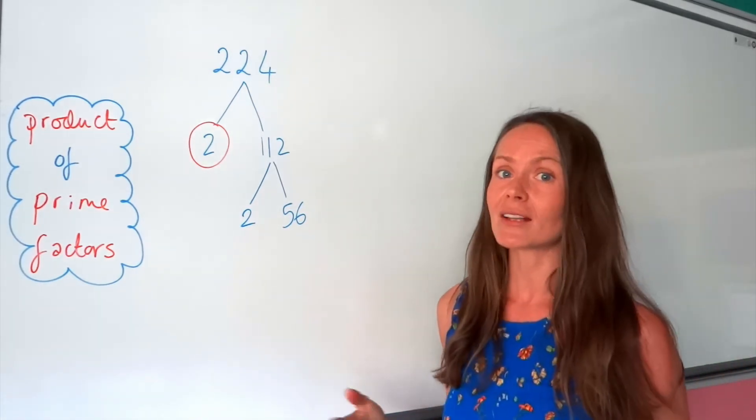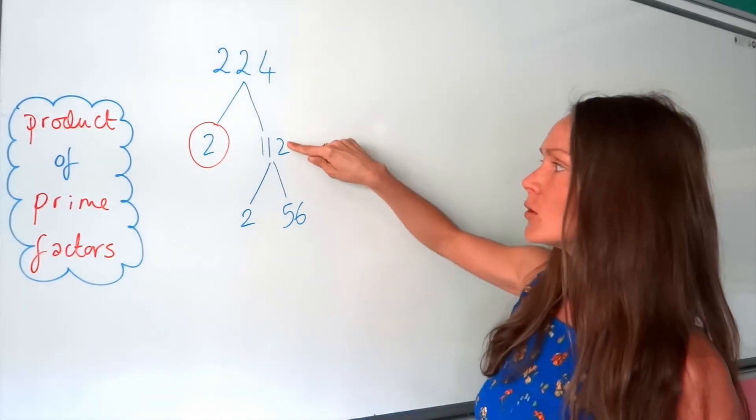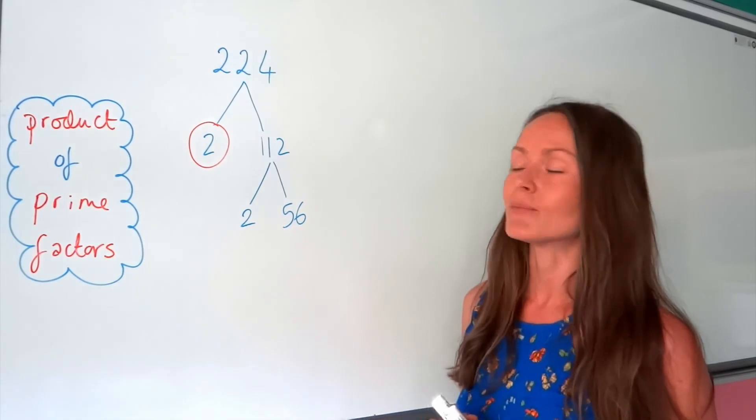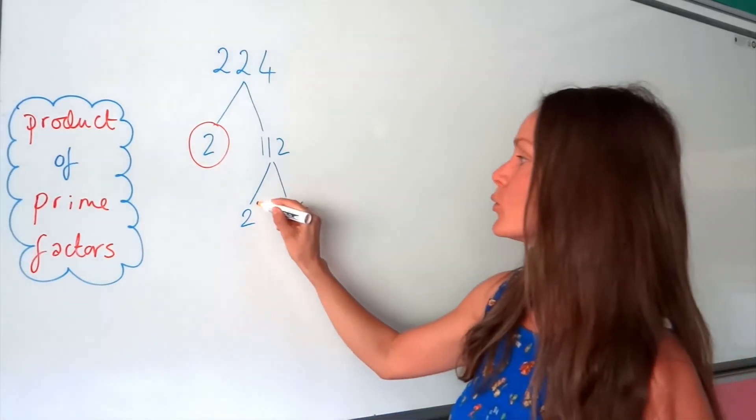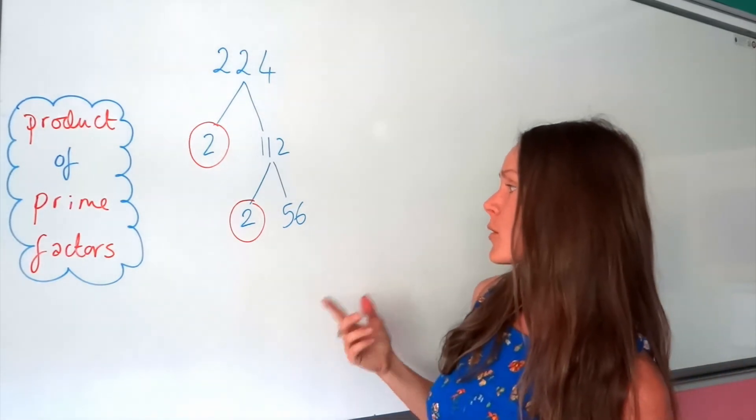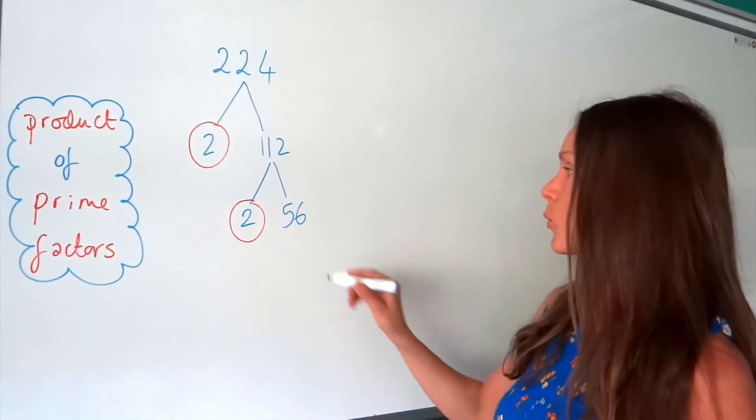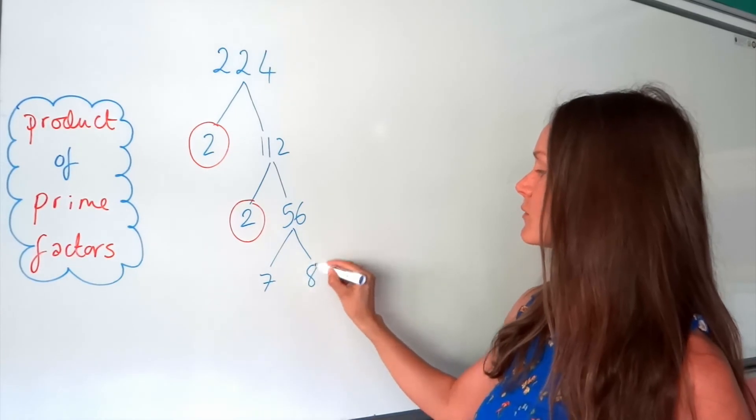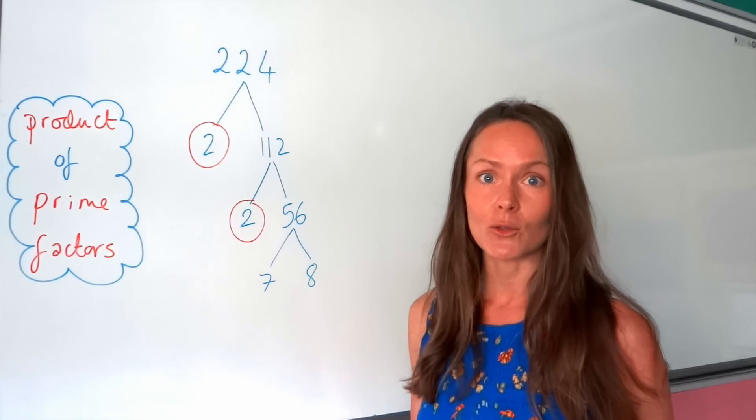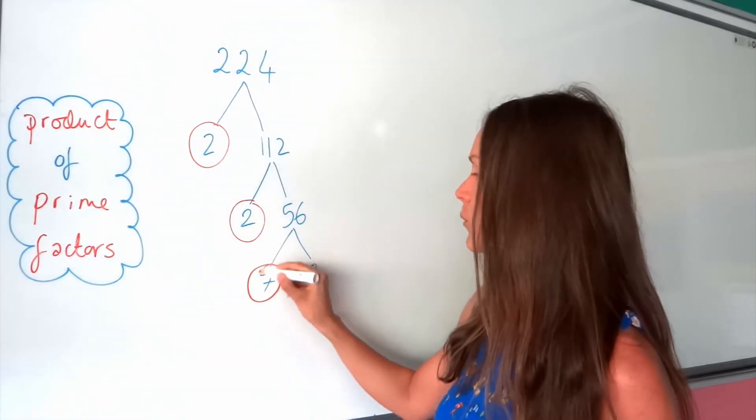Remember, if you find some different factors, that's fine. As long as you don't use 1 and 112, it will continue the tree. So again, we've already talked about the number 2, so we know that one's prime. Now, two numbers that multiply to give 56. Well, I know 7 times 8 gives me 56. And 7 is a prime number because 7 only has two factors. So I can circle that one too.